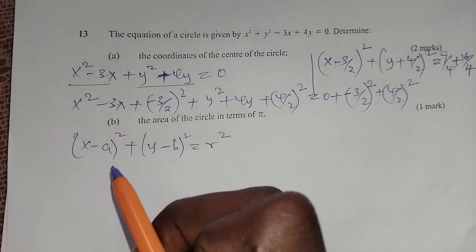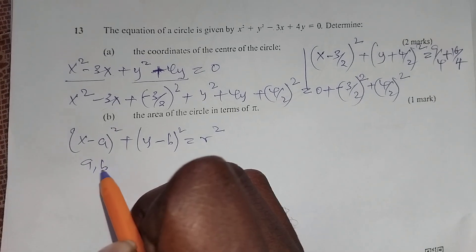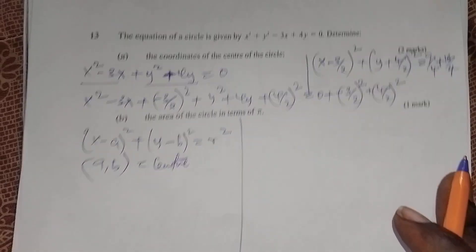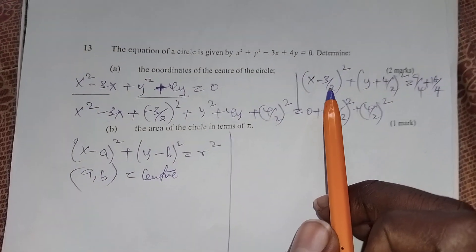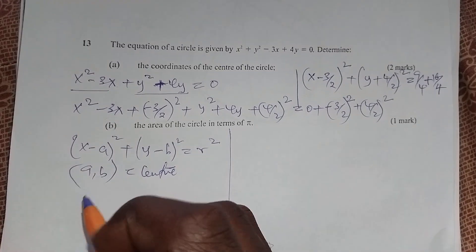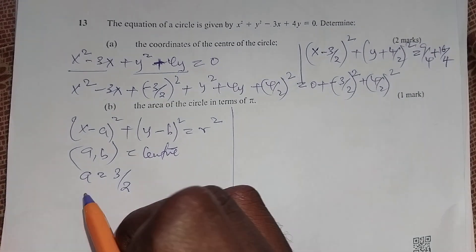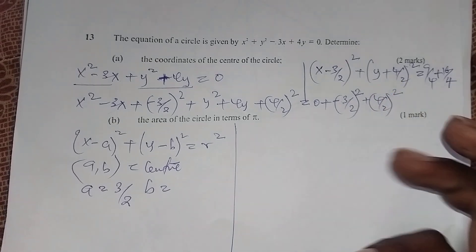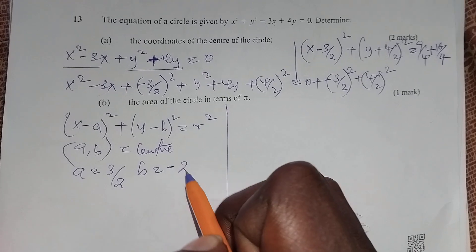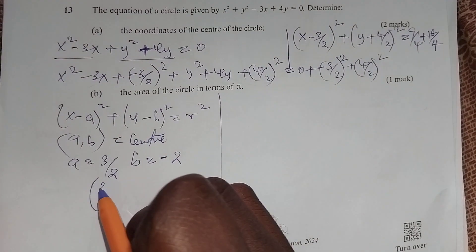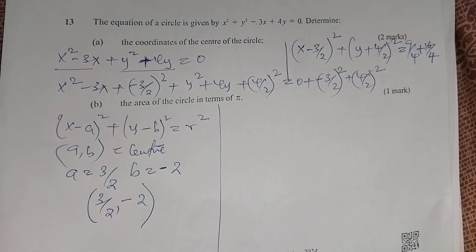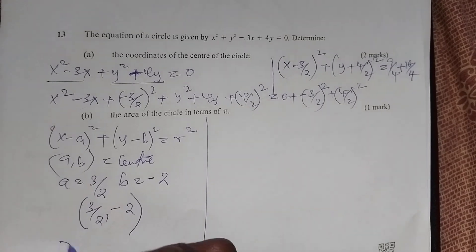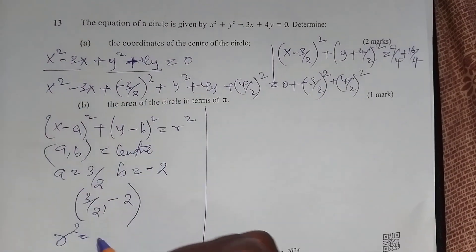We know a and b are the center coordinates. So a is 3 over 2, then b — 4 divided by 2 taken to the other side becomes negative 2. So the center is (3 over 2, negative 2).